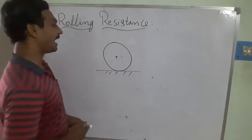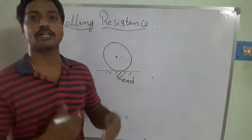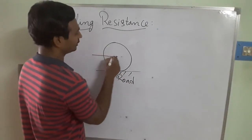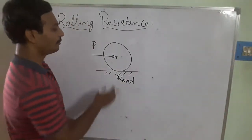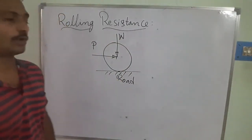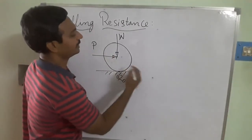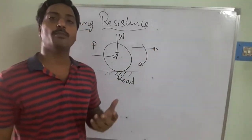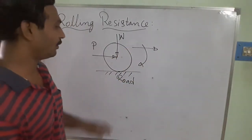I have taken a horizontal surface representing a road, and a circular object representing the wheel. A force P — the applied force — is acting on the wheel in the horizontal direction. The self-weight W acts vertically downward. When the force is applied, the body tries to move in the forward direction while also rotating about its own axis — so it undergoes two combined motions: translatory motion and rotational motion.